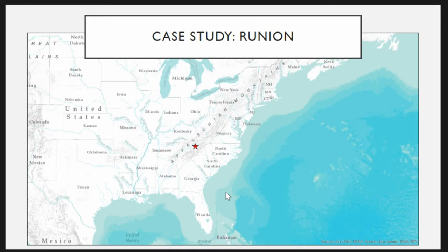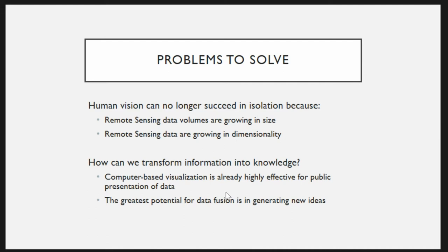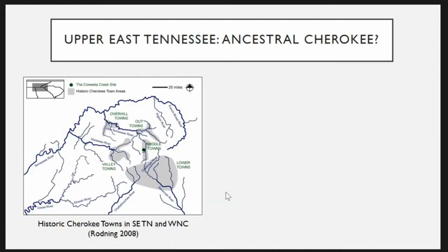I have a case study to illustrate this idea — a work in progress. Runyon is the name of an archaeological site in Tennessee, close to my university, in the southern Appalachian Mountains on the border of Tennessee and North Carolina. At this site, the broad research question is that we know a site is here because a burial was eroding out of the river bank and there are some artifacts on the surface, but there's no other surface expression. This area is largely unexplored in archaeology.